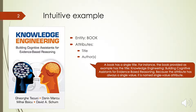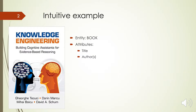A book has a single title. For instance, the book provided as an example has the title Knowledge Engineering: Building Cognitive Assistance for Evidence-Based Reasoning. Because the attribute always has a single value, it is named a single-value attribute.